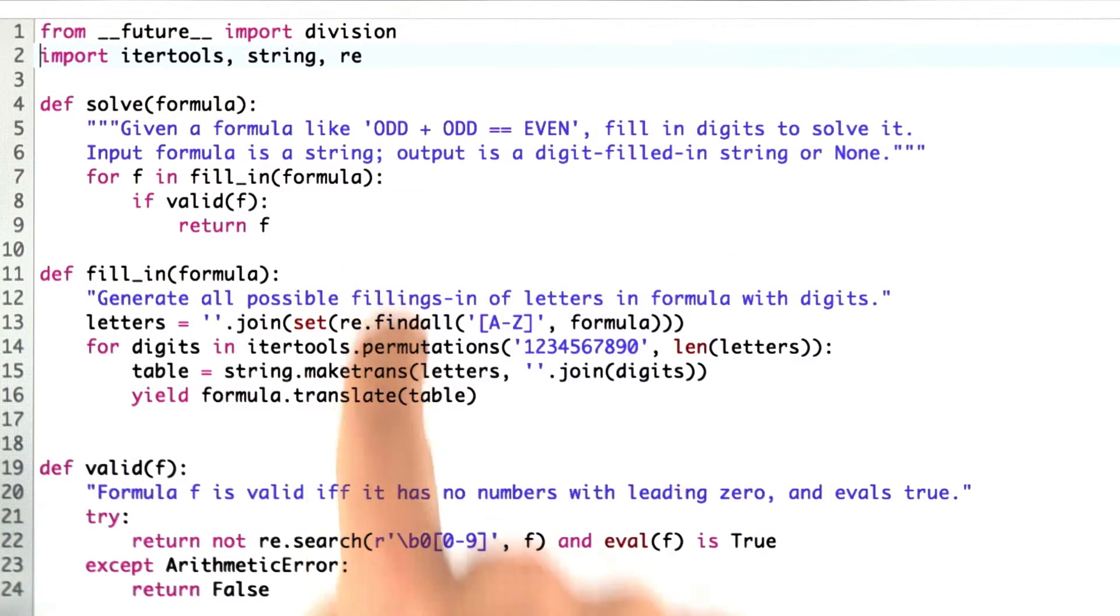So now I'm done, and I've got a pretty concise program. It followed my plan very nicely. I like this design of the three pieces that I've divided it up into. Look how simple the solve function is. It just says iterate over all possible ways of filling it in, ask if it's valid, and if it is, return. Can't get much more clear than that.